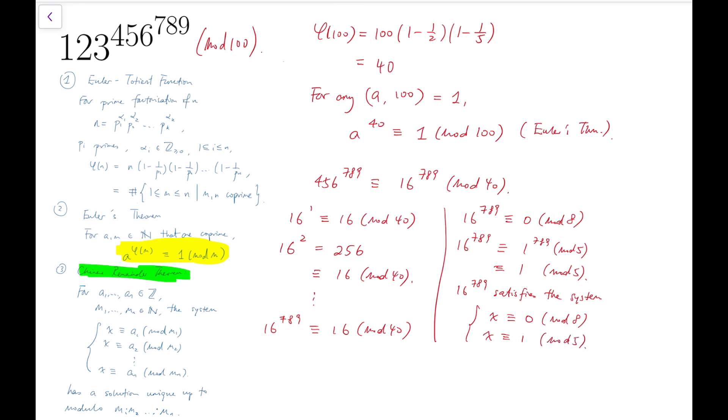Now that means this number satisfies the system: congruent to 0 mod 8 and at the same time congruent to 1 mod 5. Now by the Chinese Remainder Theorem, I call it CRT for short, I can always find a solution that is unique inside mod 40. So that means by solving this system, I'm actually computing the original power mod 40. And I'm not going to use the algorithm in solving this system, but because the number is quite small, so I can simply solve this by trial and error. And by doing so, we can see that 16 is a solution, so that power is also congruent to 16.